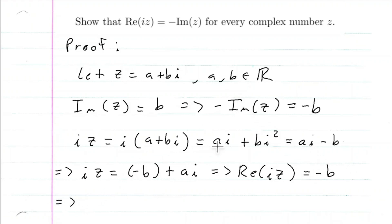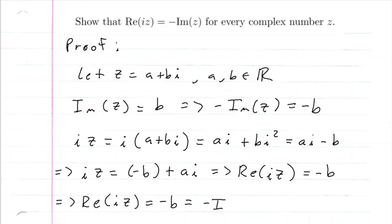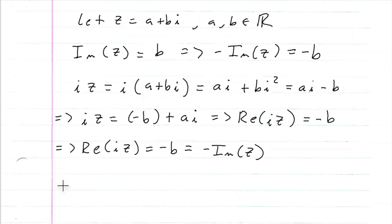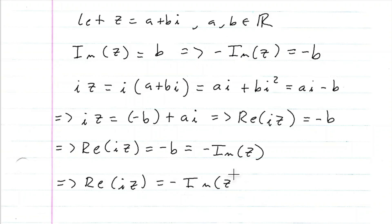This implies that the real part of i times z is equal to negative b, and negative b is equal to the negative imaginary part of z. So that does give us what we are looking for: the real part of i times z is equal to the negative imaginary part of z. And that is the proof.